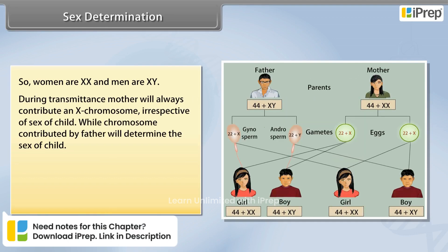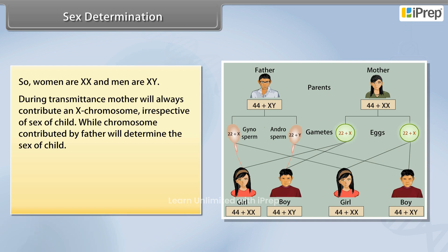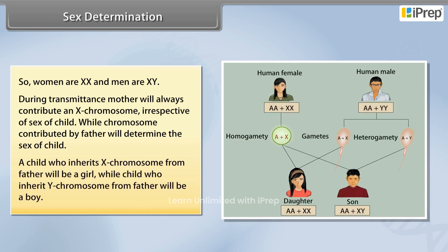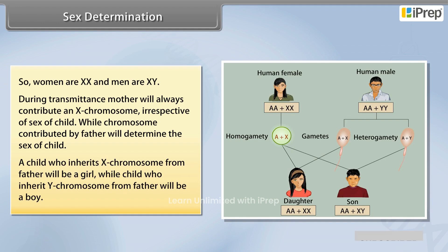During transmission, the mother will always contribute an X chromosome irrespective of the sex of the child, while the chromosome contributed by the father will determine the sex of the child. A child who inherits an X chromosome from the father will be a girl, while a child who inherits a Y chromosome from the father will be a boy.